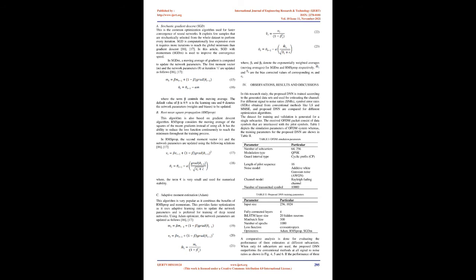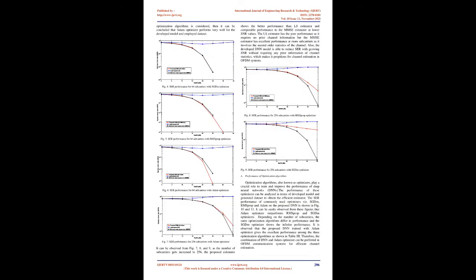B. Root Mean Square Propagation (RMSProp): This algorithm is also based on gradient descent algorithm. RMSProp considers the moving average of the squares of the recent gradients instead of using all. It has the ability to reduce the loss function continuously to reach the minimum throughout the training process. In RMSProp, the second moment vector (v) and the network parameters are updated using the following relations (equations 17-18), where the term epsilon is very small and used for numerical stability.